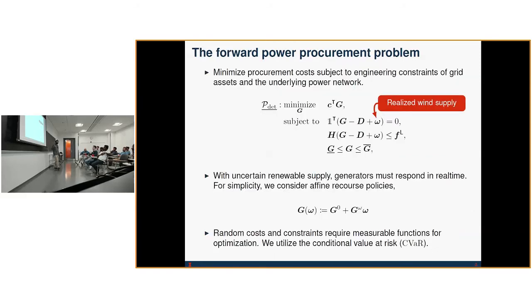To begin, our forward procurement problem for the deterministic case in which we assume that our forecasts are near perfect is given by this problem. Here we assume that omega is some constant. If the forecasts are fairly good, then solving this is sufficient. The generation won't deviate significantly from the solution to this problem, so we know it's approximately very close to feasible and optimal, which means we should be okay in terms of the operating point.